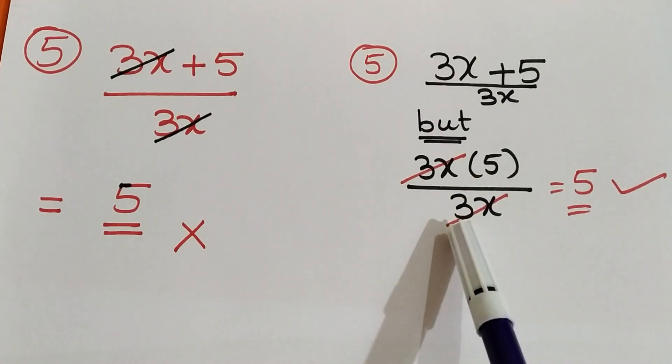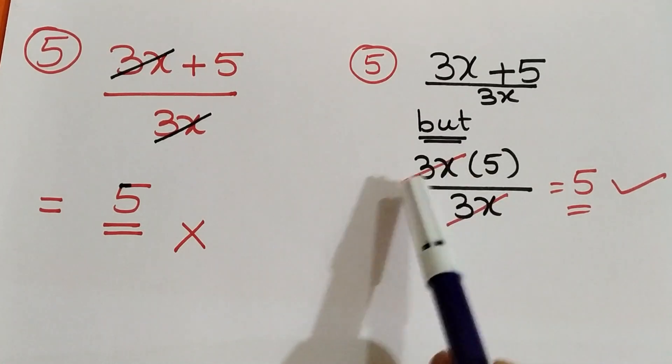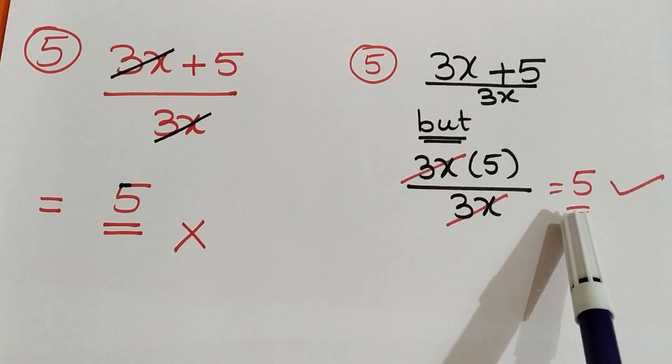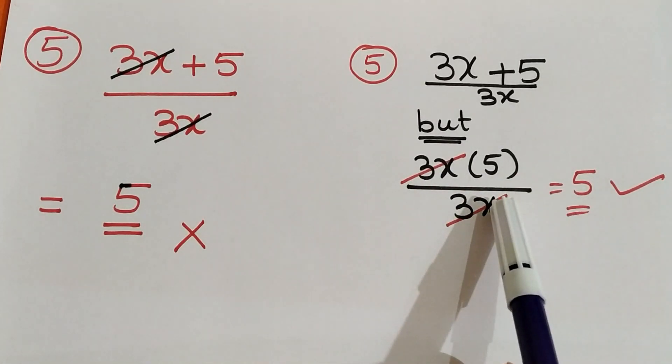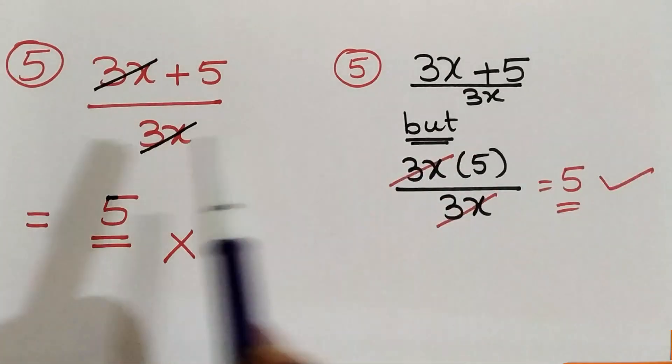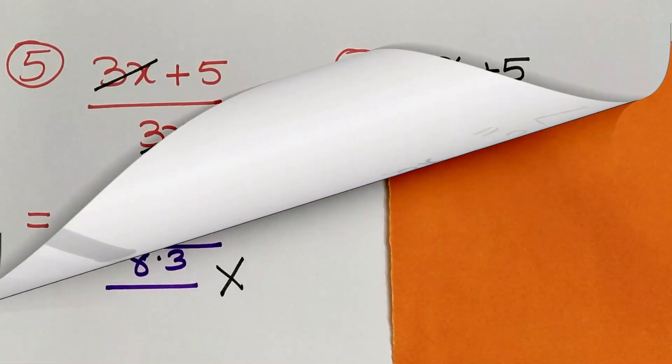However, in multiplication we can do that. For example: (3X into 5) divided by 3X — here 3X and 3X get cancelled, and 5 is the answer. That is the correct procedure for multiplication, but cancelling in addition is a wrong procedure.